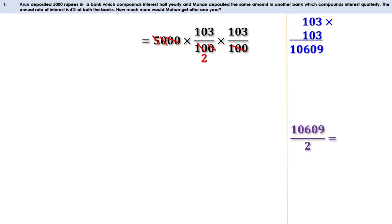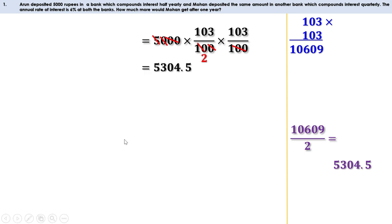Dividing 10,609 by 2 gives 5,304.5 — that is 5,304 rupees and 50 paise. Rounding, the amount is 5,305 rupees. So after one year, Aidan gets 5,305 rupees.